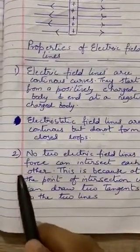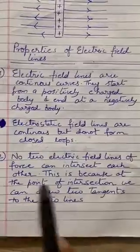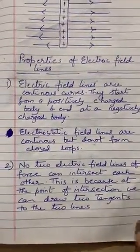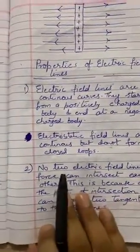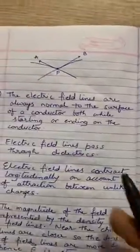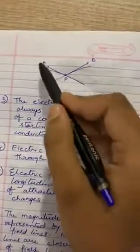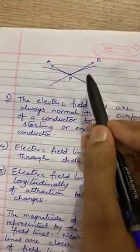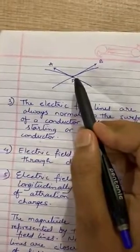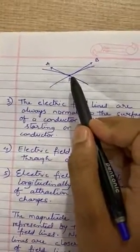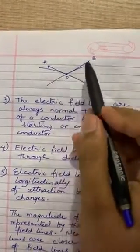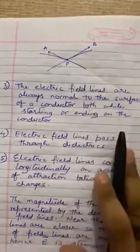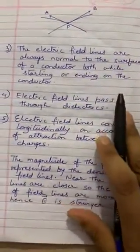The second point: no two electric field lines of force can intersect each other. Electric field lines will never intersect each other. Why? Because if electric field lines did intersect, at the point of intersection we would have tangents in two different directions, which is not possible.